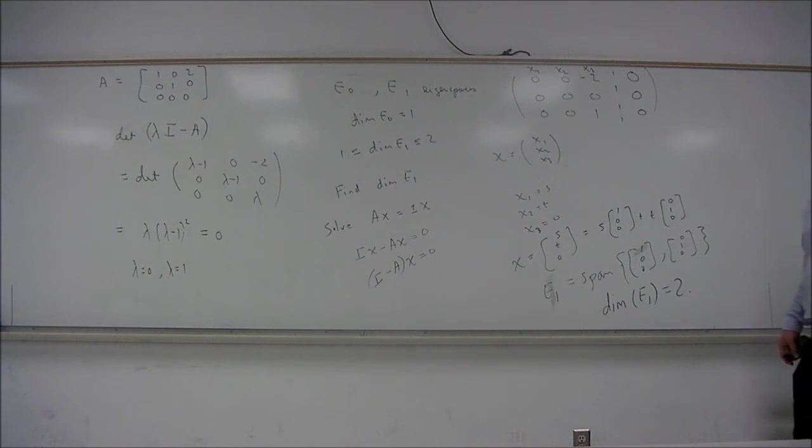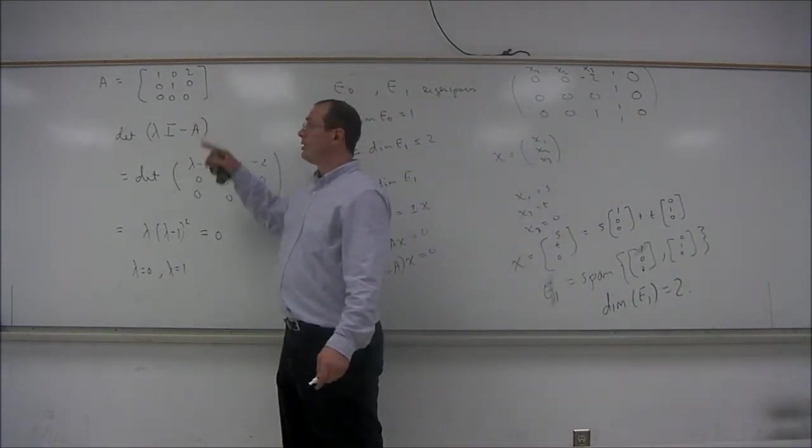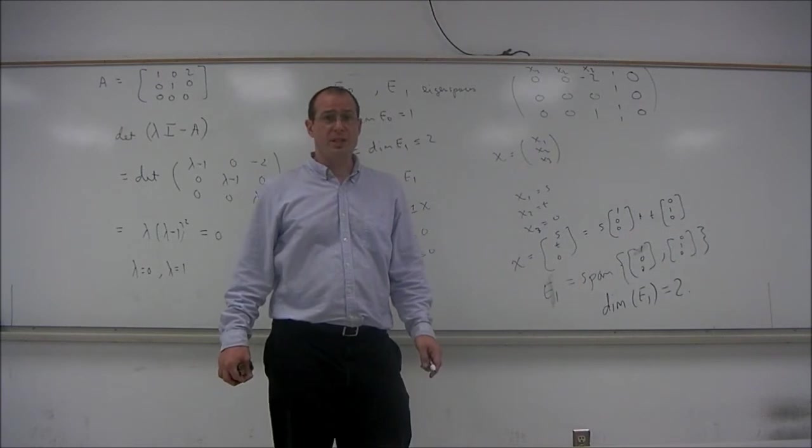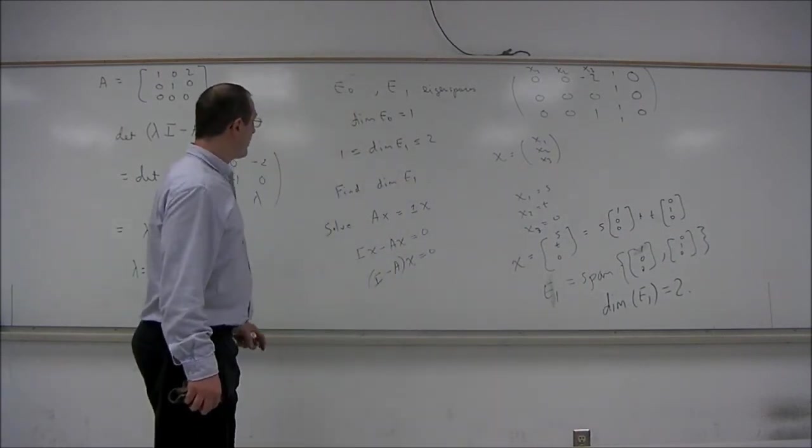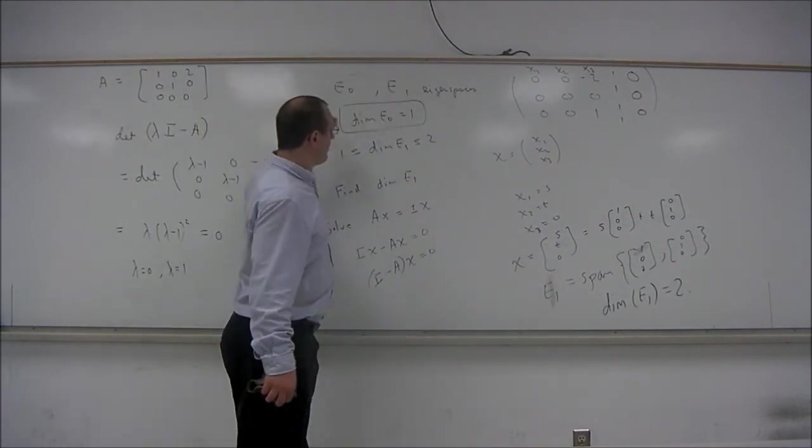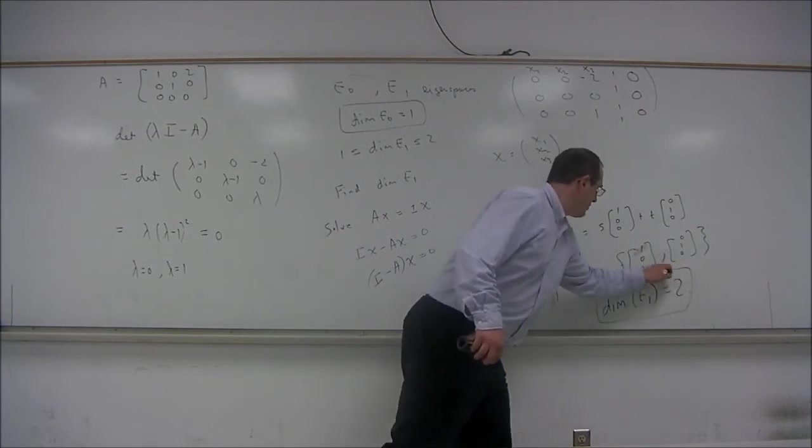and so the dimension of E1 is equal to 2. So the matrix A is diagonalizable. The sum of the dimensions of the eigenspaces is 3. One of the eigenspaces has dimension 1, and the other eigenspace has dimension 2.